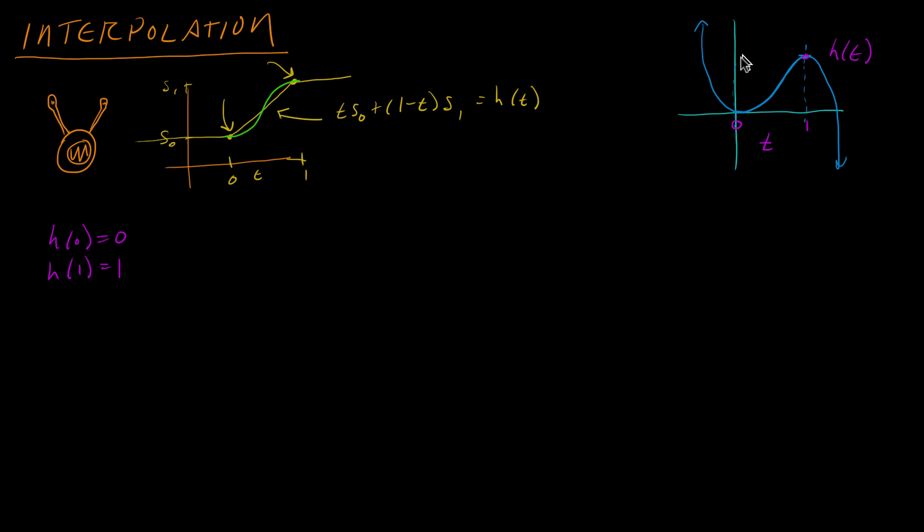And now we're also concerned about the derivative of the function because that is the slope of the function. Recall that the derivative is the slope and we want the derivative at 0 to be flat, we want the derivative at 0 to be 0. And we also want the derivative at 1 to be flat, and that will get us the easing in and out. It should be flat here and flat means the derivative should be 0.